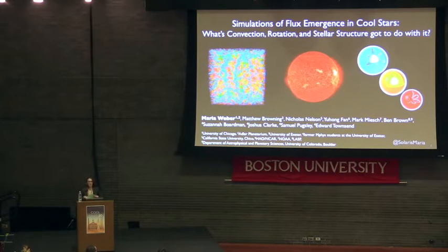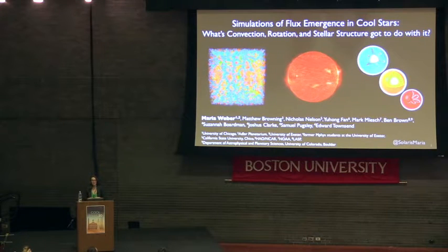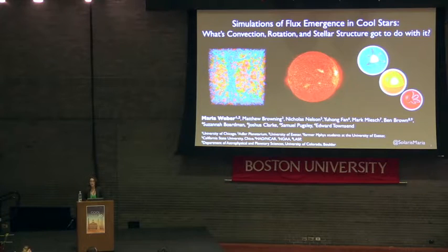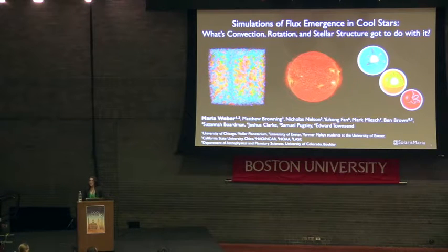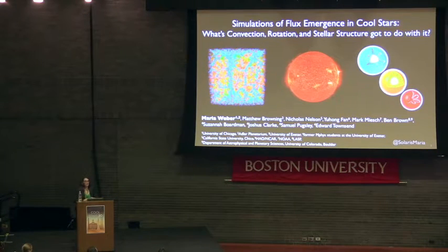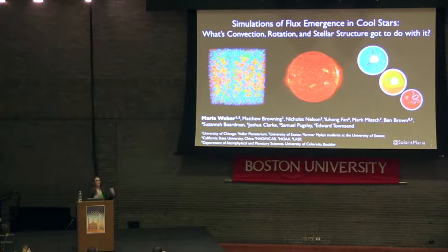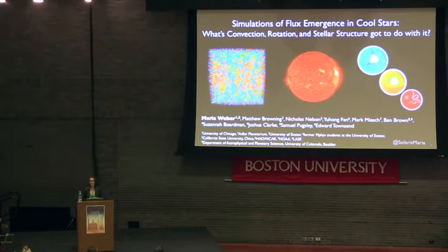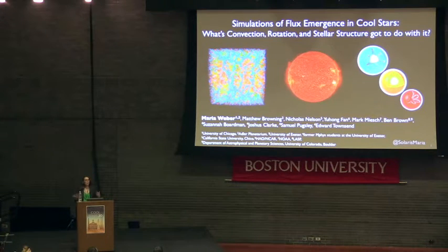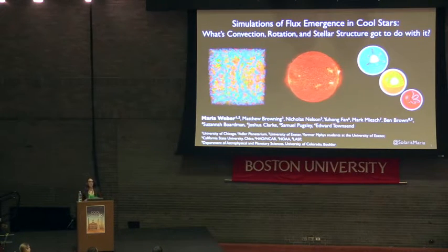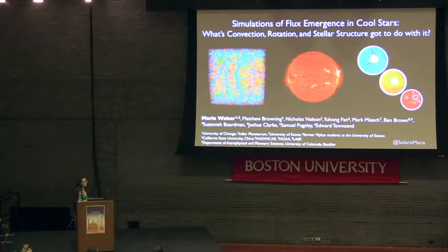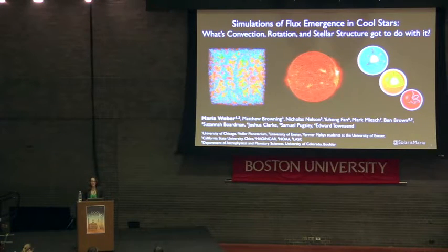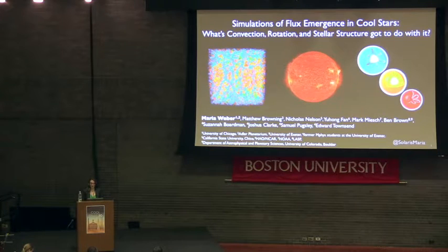Today I'm going to highlight some overarching themes that we've found across simulations in both solar-like stars and fully convective M-dwarfs — namely that convection, rotation, and stellar structure or spectral type are all important contributing factors to the general trend of magnetic flux emergence, at least as we see in our simulations in stars along the lower end of the main sequence.